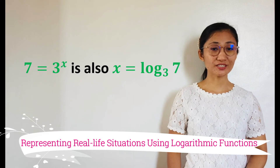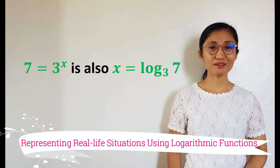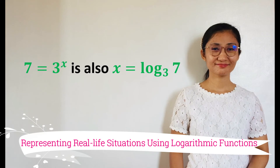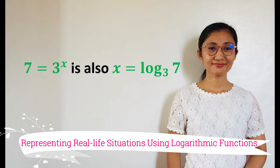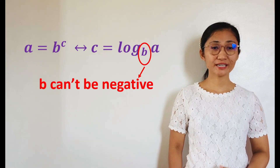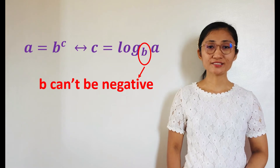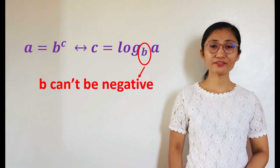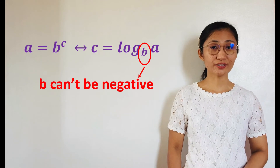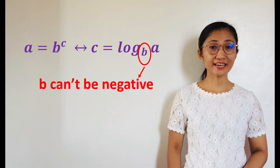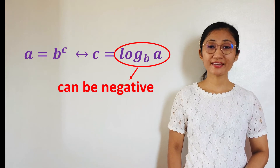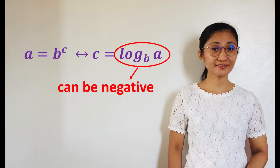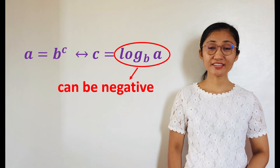Observe how an exponential function is translated into a logarithmic function. Moreover, the base of a logarithm can't be negative. Considering a equals b to the c, and its logarithmic equivalent c equals logarithm of a to the base b, b cannot be negative in both equations. Also, from this equivalence, the logarithm of a to the base b can be negative since it is equal to c, which can take a negative number in the exponential form.